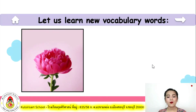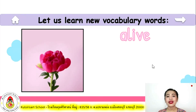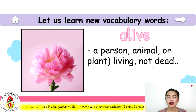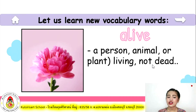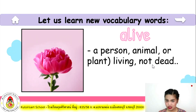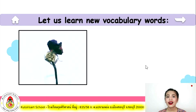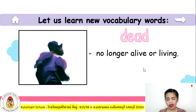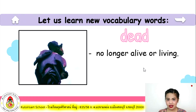That is called alive. Alive means a person, animal, or plant living and not dead. Next, we have dead — no longer alive, no longer breathing, no longer growing.